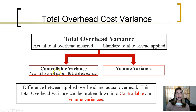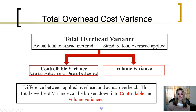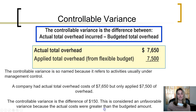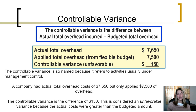The controllable variance is the difference between the actual total overhead incurred and the budgeted total overhead. The volume variance is going to be the difference between budgeted fixed overhead and applied fixed overhead. The controllable variance is named as such because it refers to activities that are usually under management control.